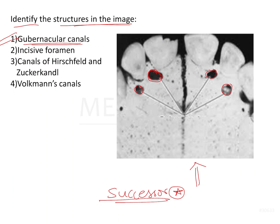The incisive foramen would be a single foramen seen in the center of the incisors, but that is not the one marked here. The incisive foramen transmits the incisive nerves and vessels. The canals of Hirschfield and Zucker Candle are canals seen within the interdental bone.